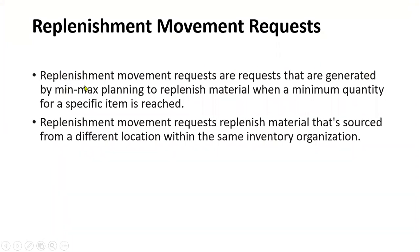The second category is replenishment movement requests. These are generated whenever we are working with the min-max planning method. We will discuss min-max planning in detail in a later session. Whenever we run min-max planning, a minimum quantity and maximum quantity are specified, and the system will automatically transfer the goods if we have less or more than the required quantities.